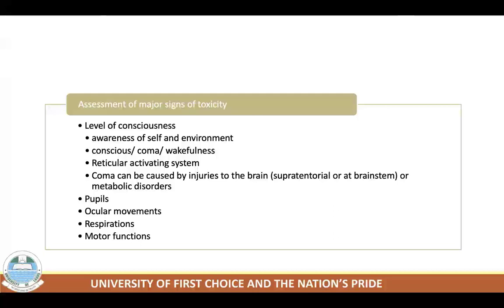A metabolic cause of coma is indicated by persistence of the pupillary light reflex and depression of consciousness more pronounced than other neurological signs. In assessing the comatose patient, pupils are most helpful: midpoint fixed pupils suggest structural lesions; pinpoint pupils suggest opioid, clonidine, organophosphate insecticide, or nerve agent overdose (e.g., sarin).